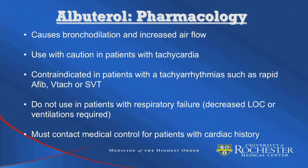If you have a patient that already has a baseline tachycardia, you want to use albuterol with caution and potentially use a lower dose. In someone that has a tachyarrhythmia, albuterol would be contraindicated. To review: albuterol causes bronchodilation and increased airflow. It should be used with caution in patients with tachycardias and is contraindicated in patients with a tachyarrhythmia such as rapid A-fib, V-tach, or an active SVT.